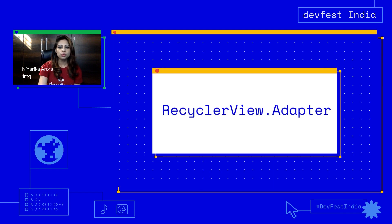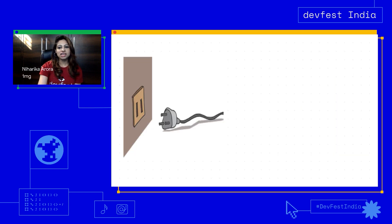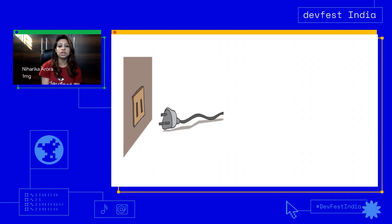To implement RecyclerView, we need an adapter which will bind data with the views on the screen, and for that we use RecyclerView.Adapter class. Think of it like a charging adapter for your devices — it just knows its job and adapts to work with any environment. Similarly, in the Android world, the adapter knows nothing about the origin of the data source. Its only job is to help RecyclerView show data to users by managing both the data and the views.